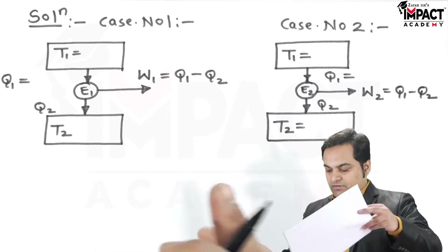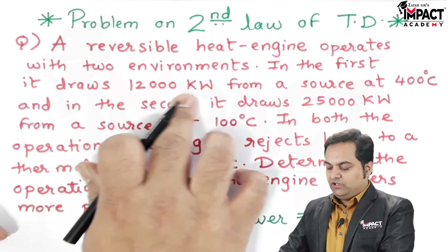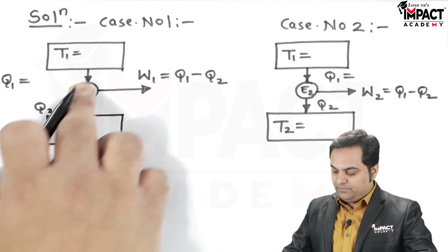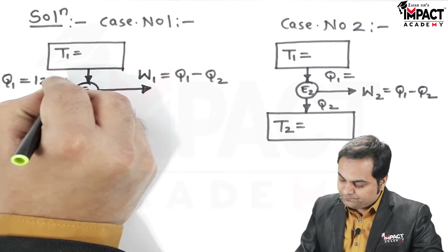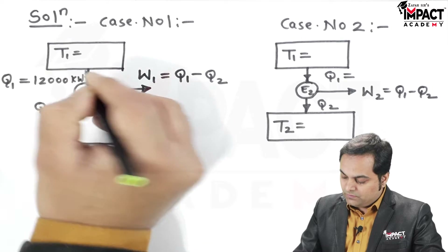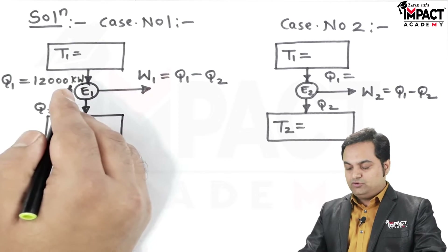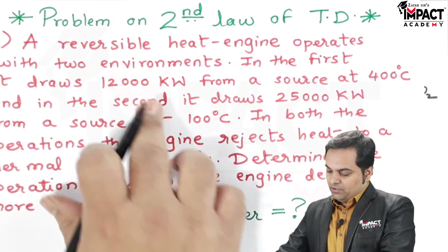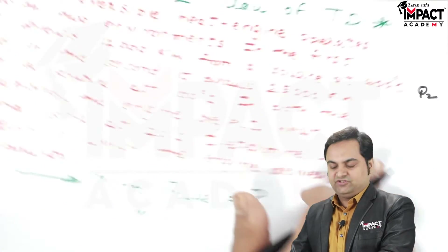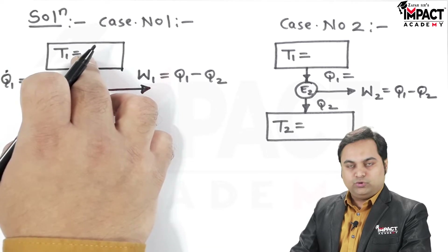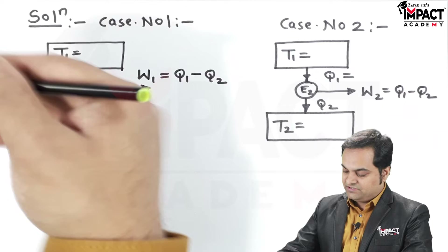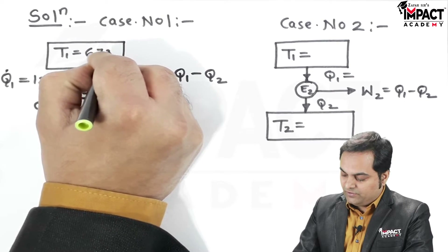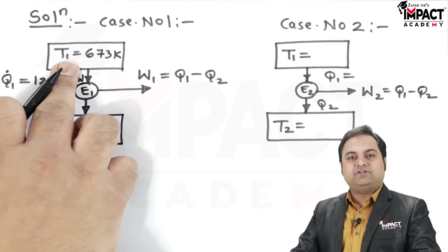The two cases I would be explaining here. In the first case, it draws 12,000 kilowatts — that means the engine is taking a heat of 12,000 kilowatts, in other words that is the heat supplied to the engine, Q1 dot equals 12,000 kilowatts. Since it is in kilowatts, that is kilojoules per second. This heat is taken from a source at 400 degree Celsius. Converting to Kelvin by adding 273, the source temperature T1 equals 673 Kelvin.